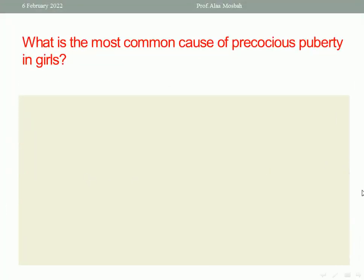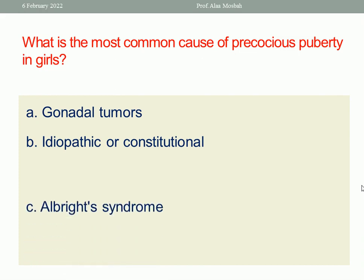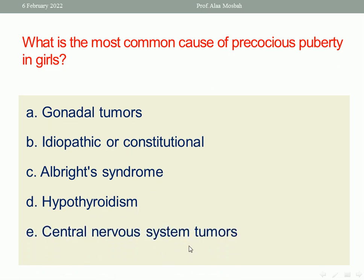Next question: what is the most common cause of precocious puberty in girls? The options are gonadal tumors, idiopathic or constitutional, Albright syndrome, hyperadrenalism, or central nervous system tumor. Many of these can cause precocious puberty, but the right answer is idiopathic or constitutional, because this is the most common cause of precocious puberty.